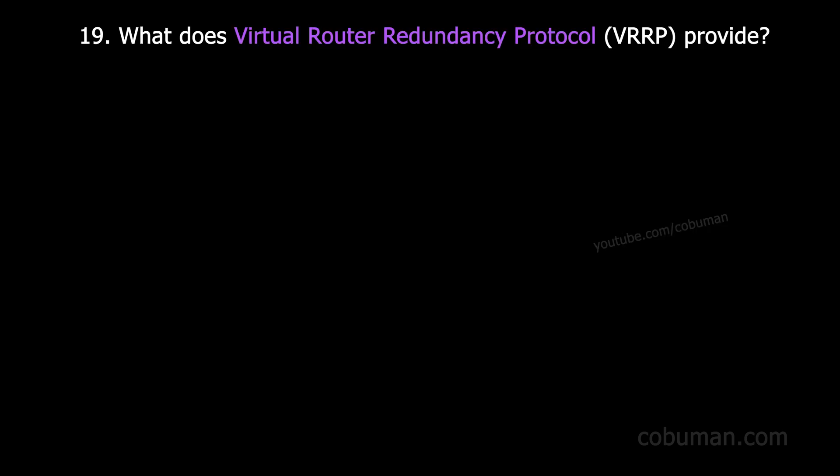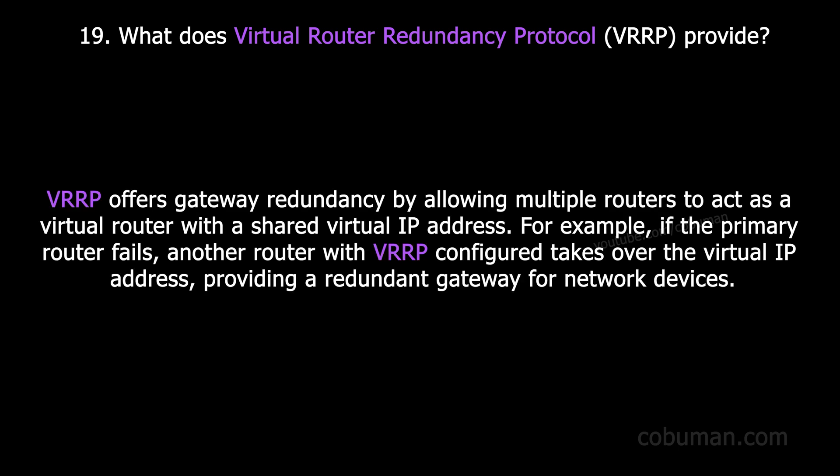Question number nineteen: what does Virtual Router Redundancy Protocol provide? VRRP offers gateway redundancy by allowing multiple routers to act as a virtual router with a shared virtual IP address. For example, if the primary router fails, another router with VRRP configured takes over the virtual IP address, providing a redundant gateway for network devices.